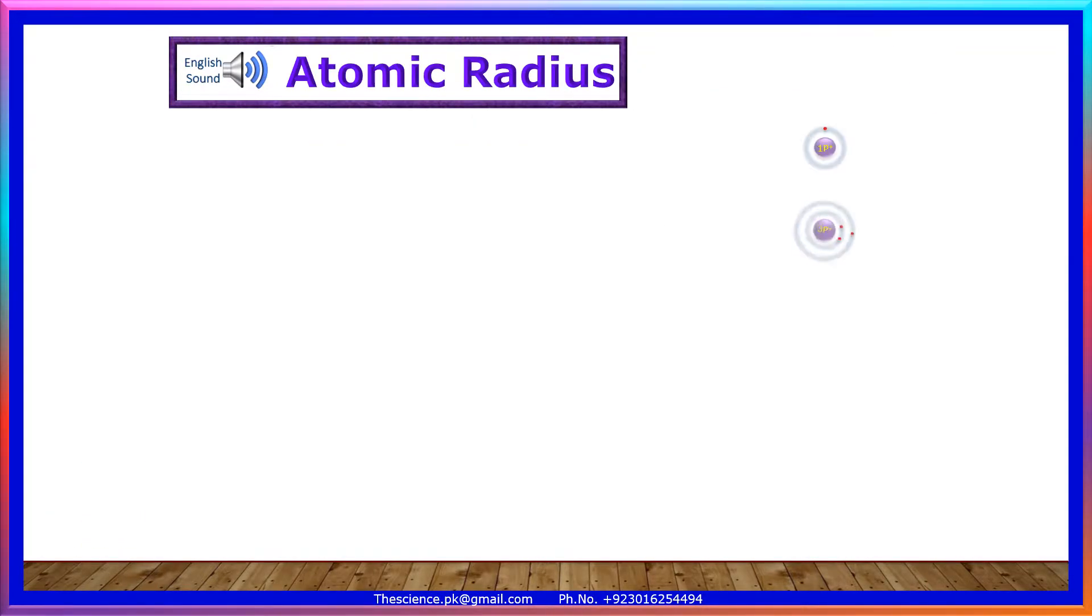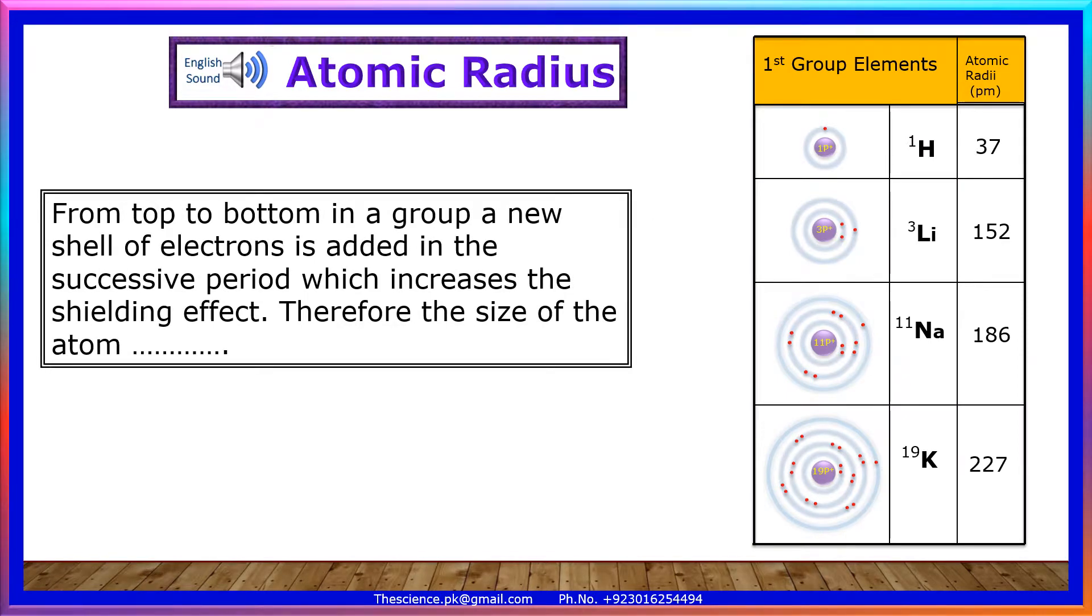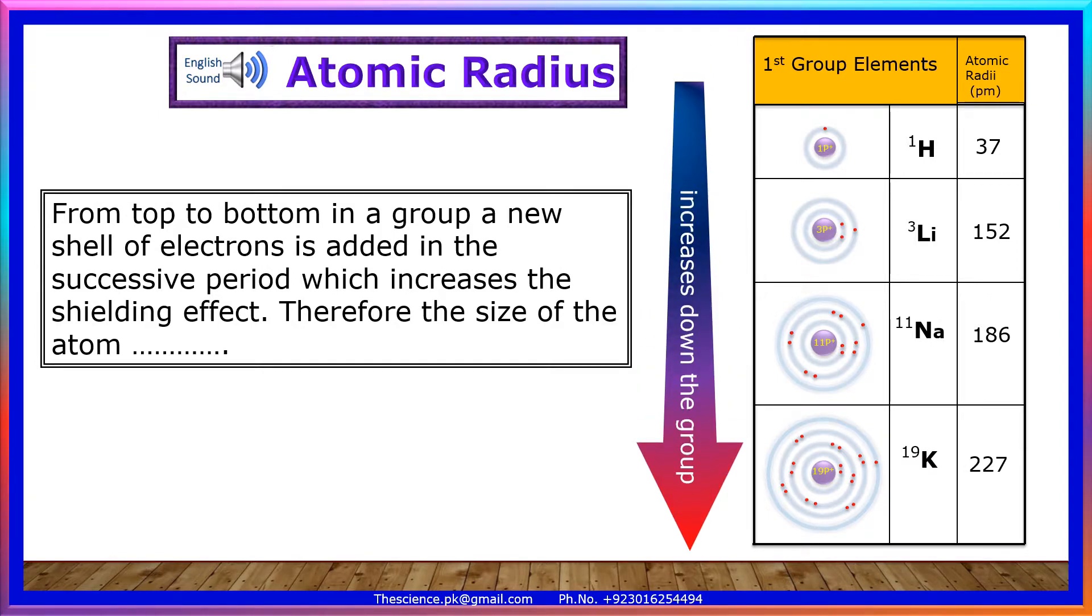Trends of atomic radius in a group. From top to bottom in a group, a new shell of electrons is added in the successive period which increases the shielding effect. Therefore, the size of the atom increases down the group, hence the atomic radius increases down the group.